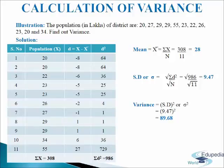We will add up the values and get sigma X equals 308. We will calculate mean which is equal to sigma X divided by n. So 308 divided by 11 we will get 28 as mean. In the third column we will calculate d, where d equals x minus mean.